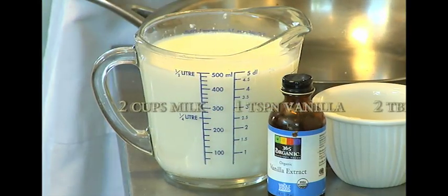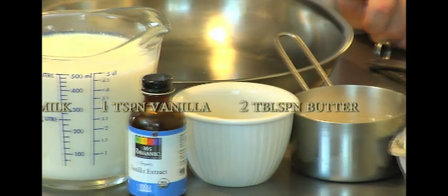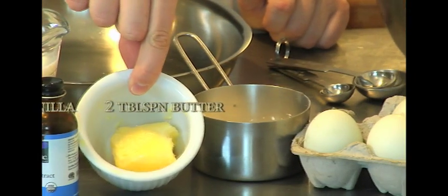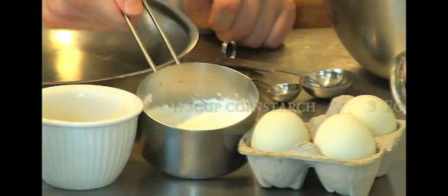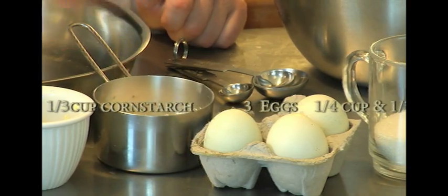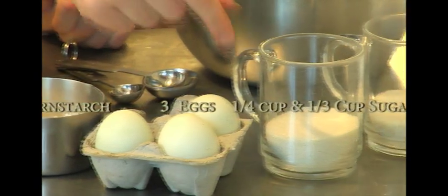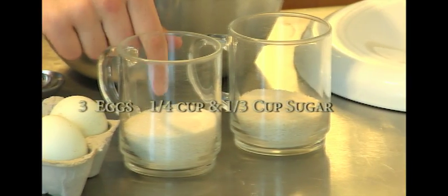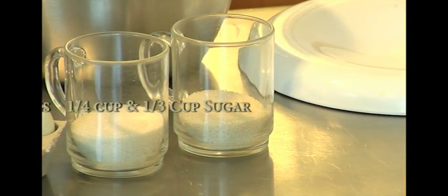So the ingredients for the custard will be two cups of milk, a teaspoon of vanilla, two tablespoons of butter, a third cup of cornstarch, three eggs, and one fourth cup of sugar, and one third cup of sugar.